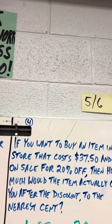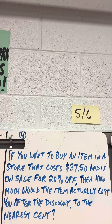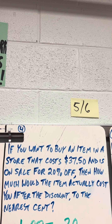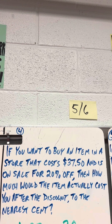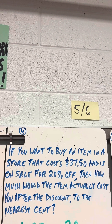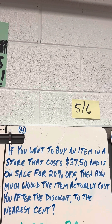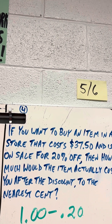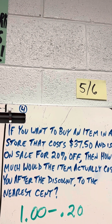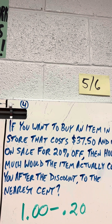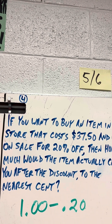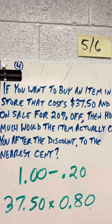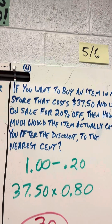Alright, so those three were increase examples. Here's a decrease example. If you want to buy an item in a store that costs $37.50 and is on sale for 20% off, how much would the item actually cost after the discount to the nearest cent? So that's 100% minus 20%, or 1.00 minus 0.20, which is 0.80. So you take 37.50 times 0.80 and your answer is $30.